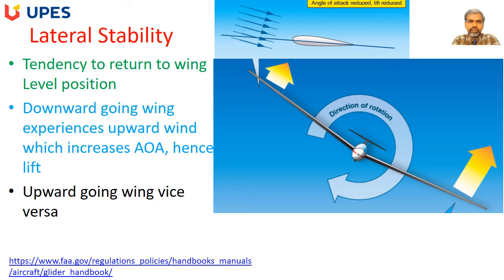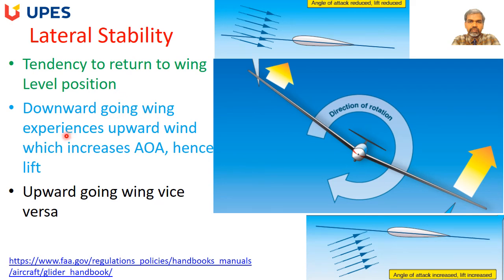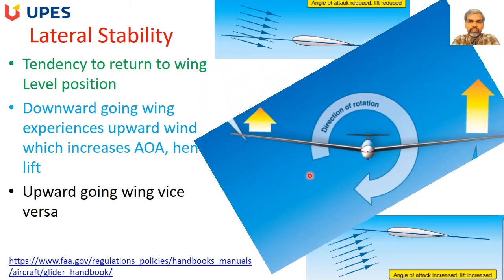Lateral stability is the tendency of the airplane to return to a wing-level position. When the airplane banks to one side, the downward-going wing experiences an upward relative wind, increasing its lift, while the upward-going wing experiences a downward wind, decreasing its lift. This lift differential creates an opposing rolling moment, returning the airplane to its original position. This is called the dihedral effect, making the airplane laterally stable.